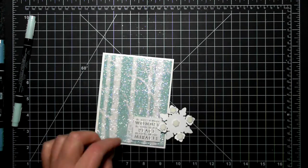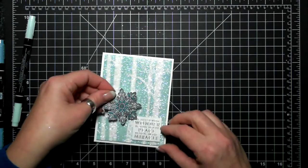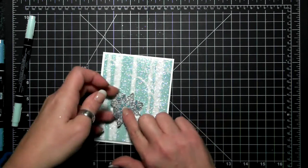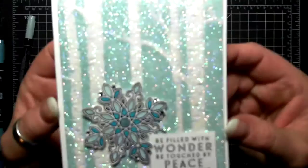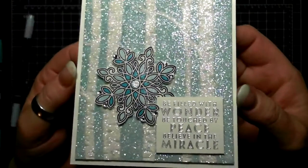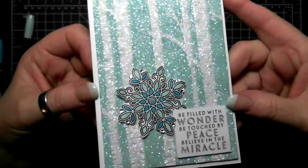I'm just putting that on with dimensionals, and then I'm putting the snowflake. I hand cut that because I don't have the punch, but I liked it better anyway, it's more detailed. That's the card. I have a couple more examples at the end of this video.